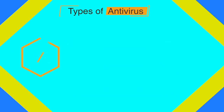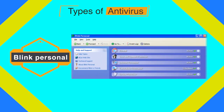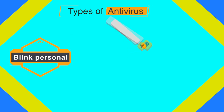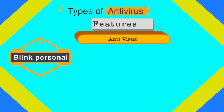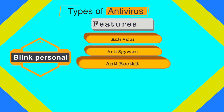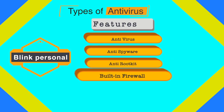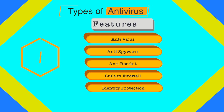The next antivirus is Blink Personal, an all-in-one security suite with antivirus protection limited to one year, after which you will need to renew. It has features similar to other antiviruses: an antivirus solution, anti-spyware, anti-rootkit, a built-in firewall, and identity protection.